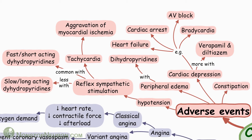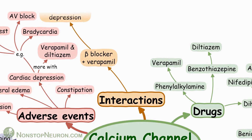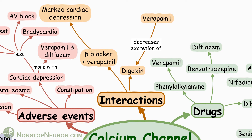Finally, constipation — it's common with verapamil. Now let's move to the last topic: interactions. Beta blockers and verapamil, if given together, can cause marked cardiac depression, so this combination should be avoided. Verapamil also decreases excretion of digoxin, which increases its level, resulting in increased toxicity.